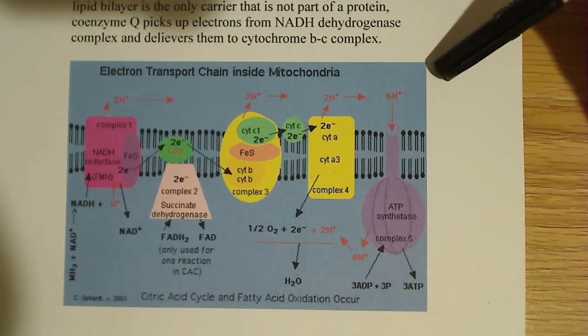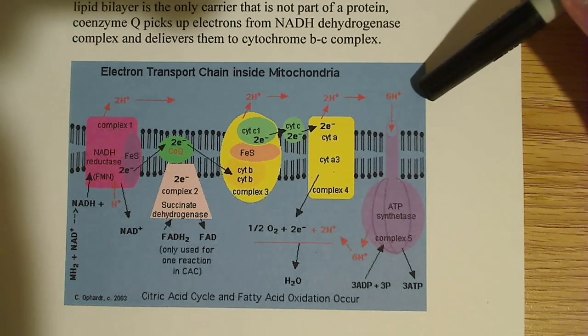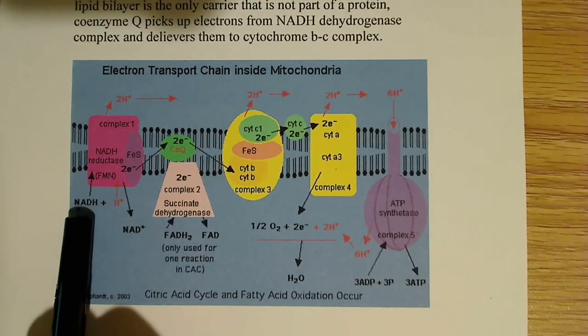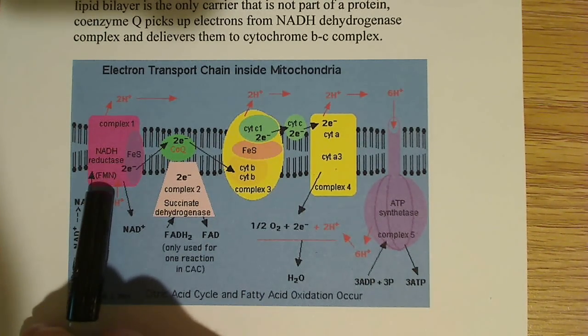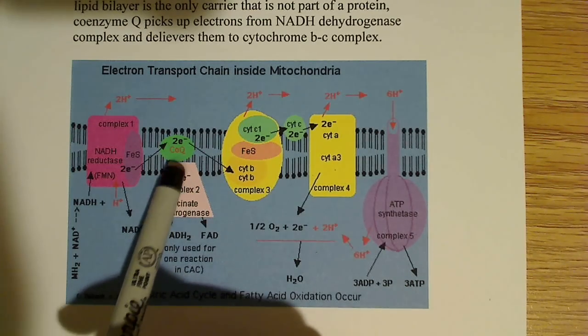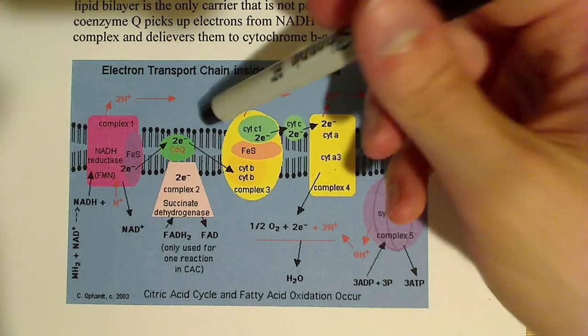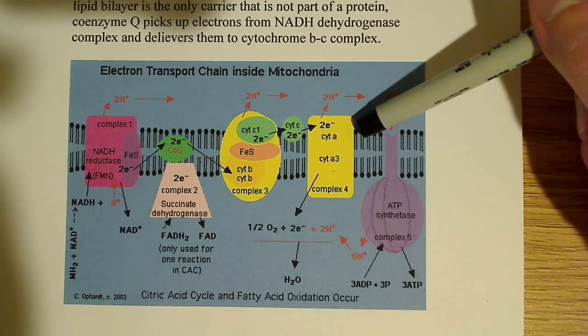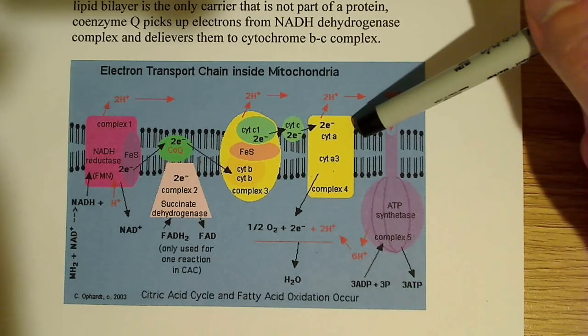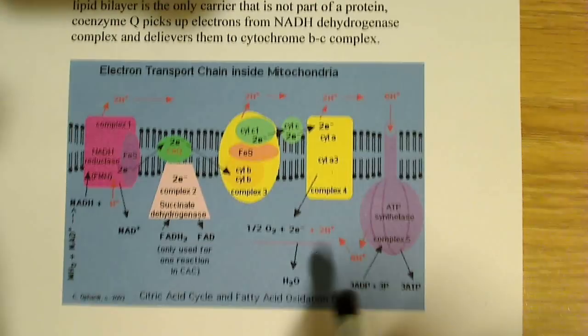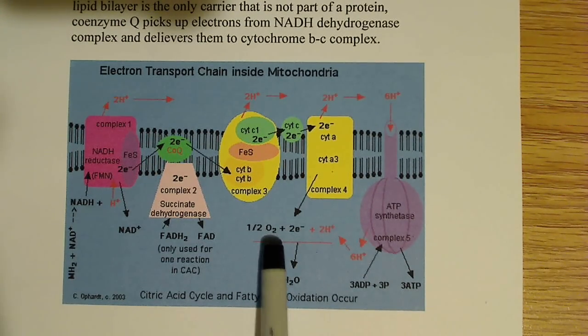If you look at this electron transport chain, this is a really good depiction of it. You have complex 1 here, so NADH donates its electrons to the NADH dehydrogenase complex. Here's the two electrons, and we have other things in here that are also used to transport the electrons to coenzyme Q. Eventually these electrons get to coenzyme Q, then they're transferred to the cytochrome BC complex, and finally they're transferred to complex 4, which is the cytochrome oxidase complex. Then the electrons are transferred to oxygen, and that forms H2O.